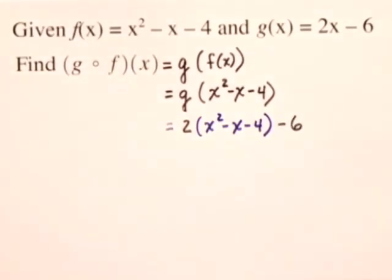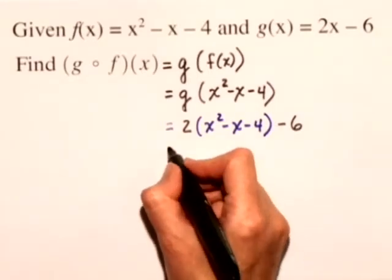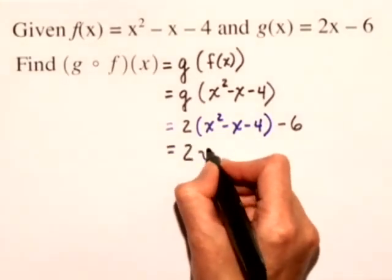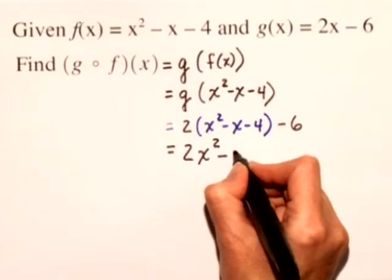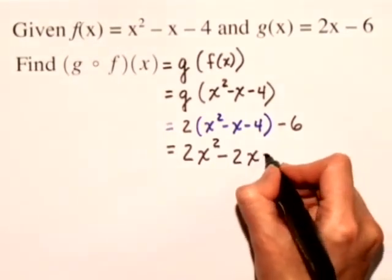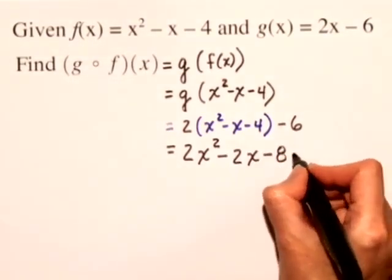We need to simplify this by distributing the 2 through, and we'll get 2x squared minus 2x minus 8, and then we have minus 6.